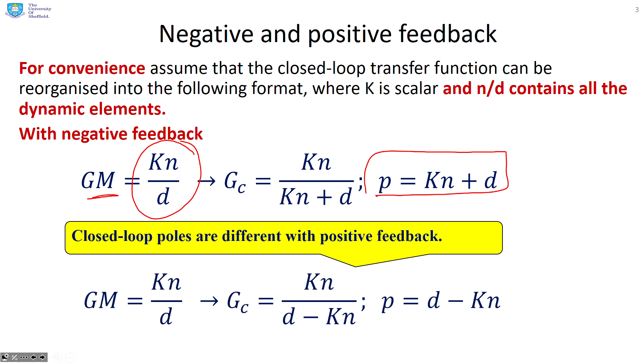If you have positive feedback, what you'll notice is you have a different pole polynomial. So you're going to get different poles and obviously the root loci will also be different.